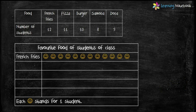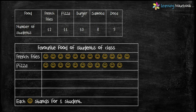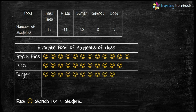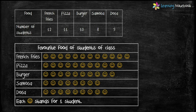Now let's represent the number of students who like pizza. There are 11 such students, so we draw 11 smileys representing 11 students. Similarly, represent the number of students who like burger, samosa, and dosa in the same way. Our pictograph is now ready.